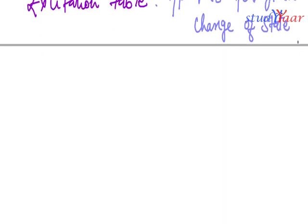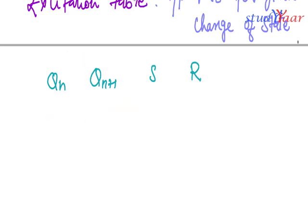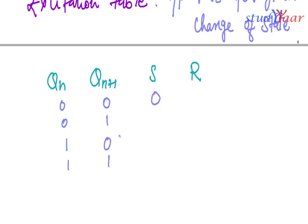It looks like this: I have Q(n), Q(n+1), S, and R. The possible scenarios are: Q(n) zero and Q(n+1) zero, zero and one, one and zero, one and one. So when Q(n) changes from zero to zero, what is your S and R?